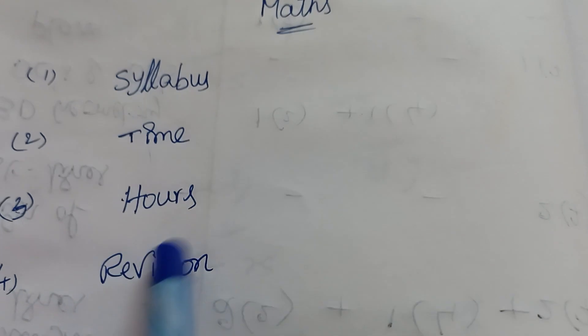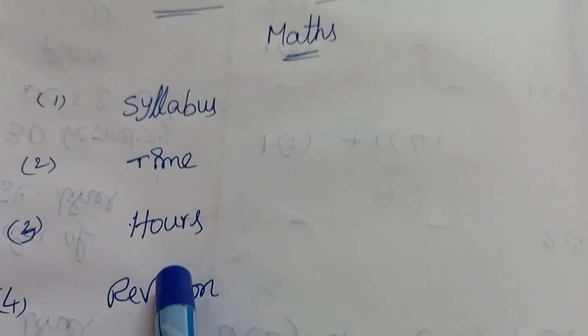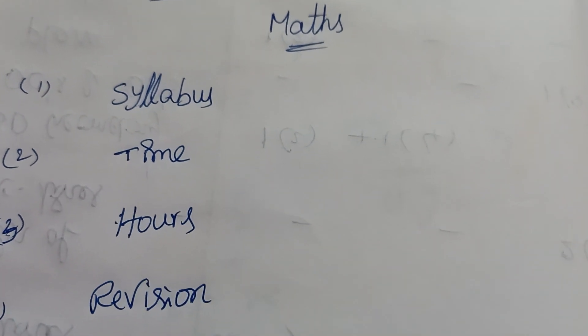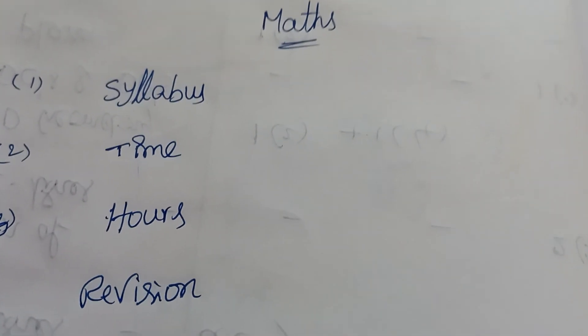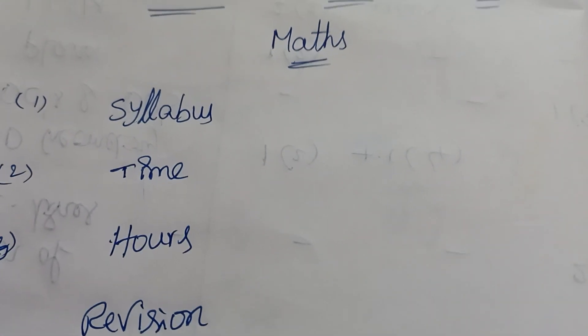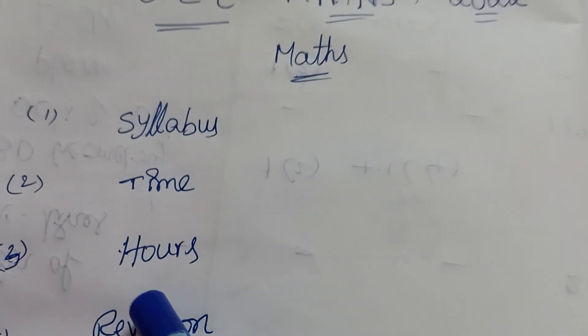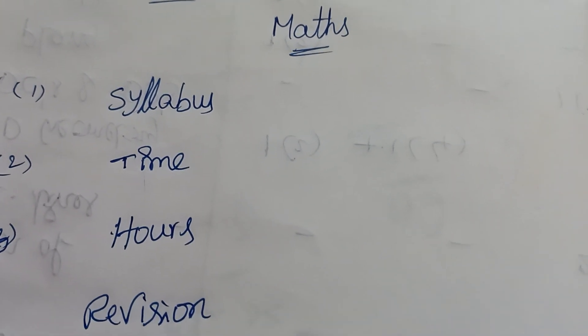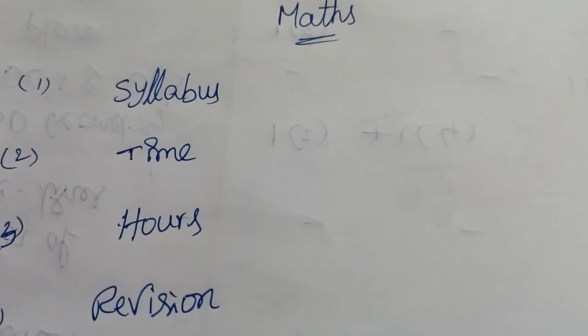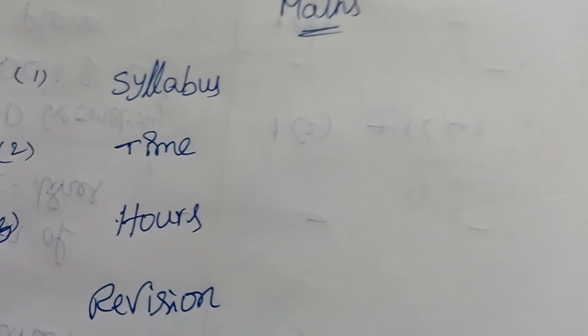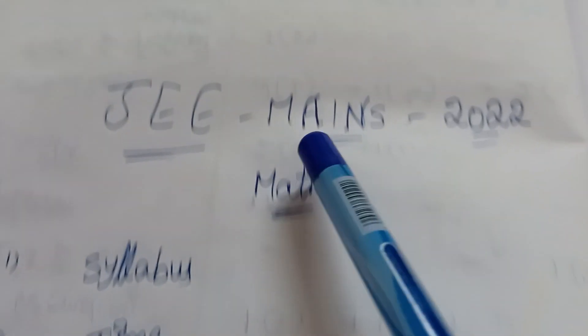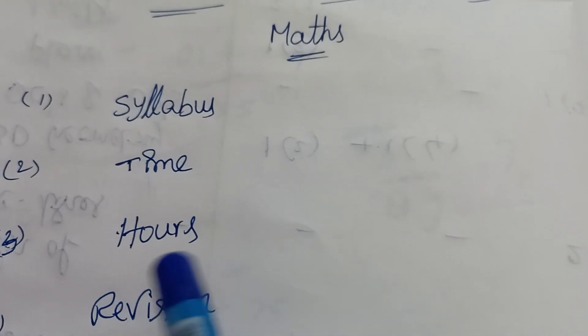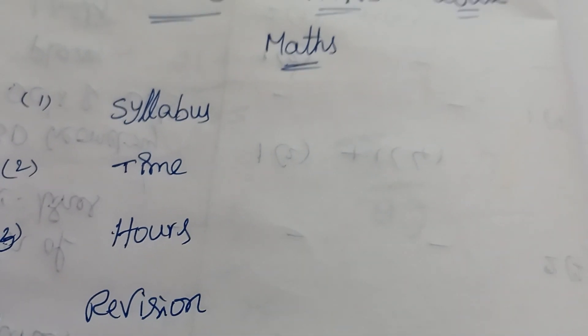How many hours should you prepare for JEE Mains and Advance? Not for 12th boards, but specifically for JEE Mains objectives. Start with 2 hours initially, then after two weeks increase the timings to 3 to 4 hours. Like separately for JEE Mains, aim for maximum 4 hours and keep increasing.